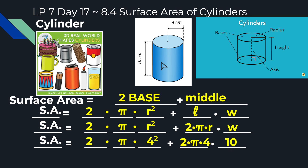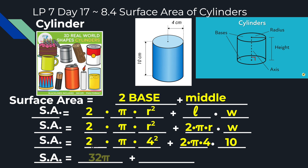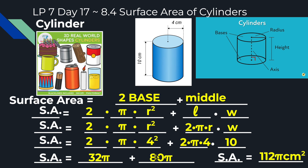Now calculating: for the bases, 4 squared is 16, times 2 is 32 pi. For the rectangle, 2 times 4 times 10 gives us 8 times 10 equals 80 pi. Combining: 32 pi plus 80 pi equals 112 pi centimeters squared. This is a surface area — not a volume — so it's squared, not cubed. I hope that helped, and I will see you after spring break.